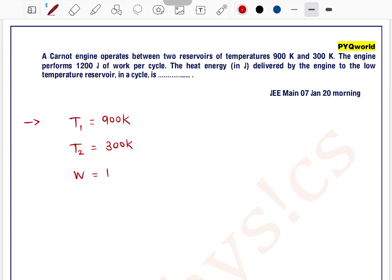The engine performs 1200 Joule of work per cycle. The heat energy delivered by the engine to the low temperature reservoir means Q2, what is the value of Q2.